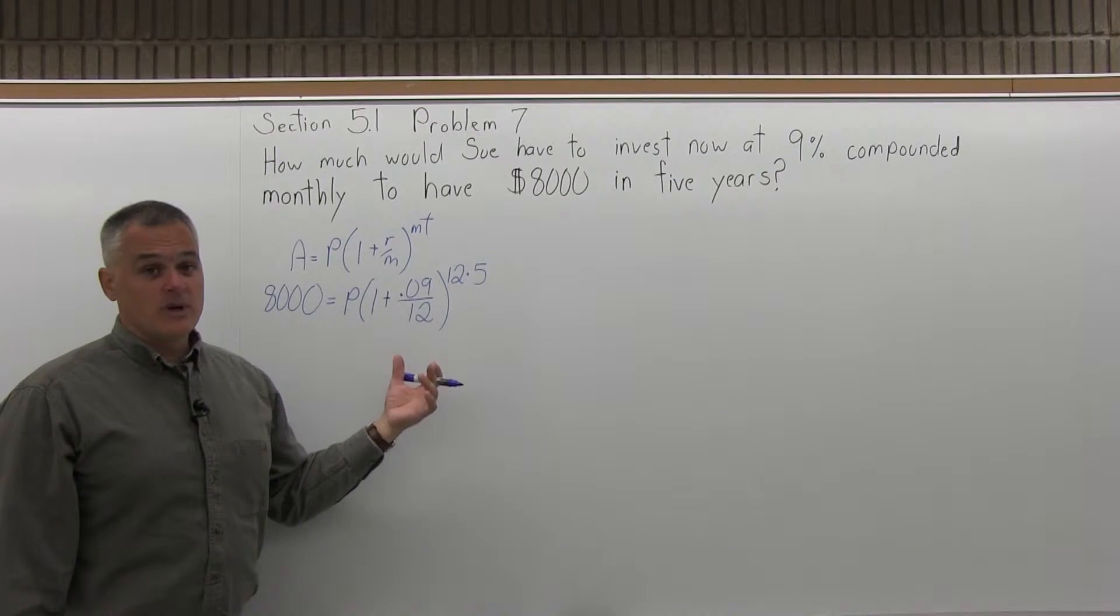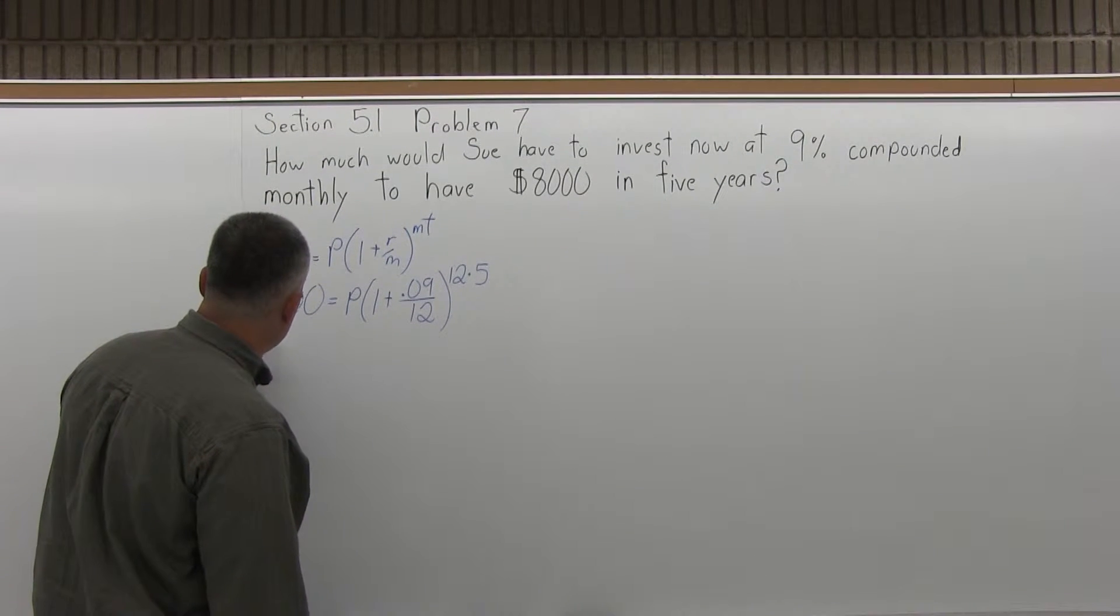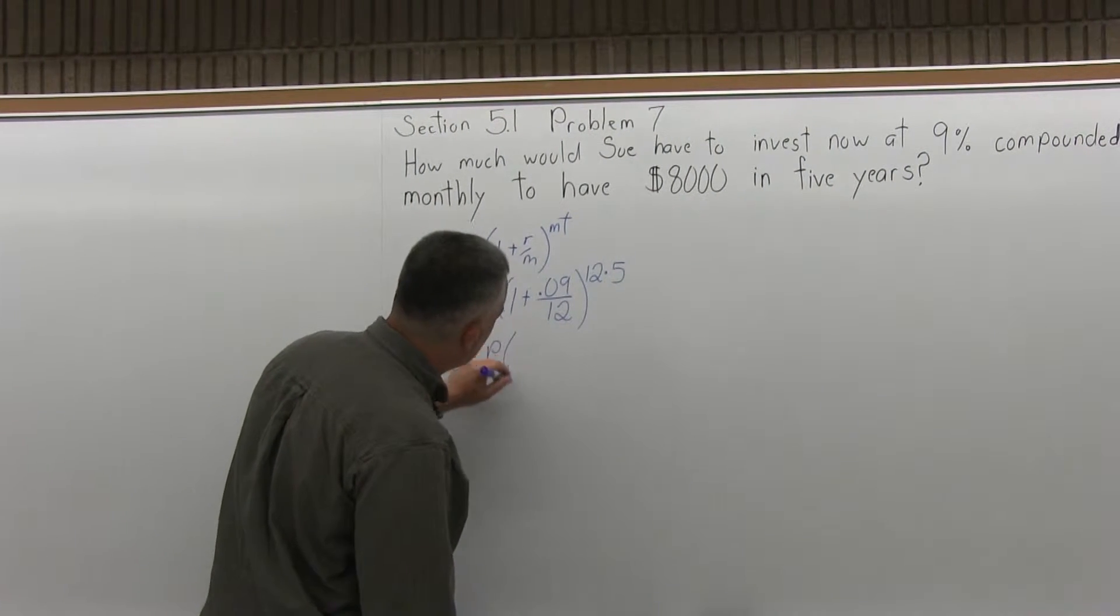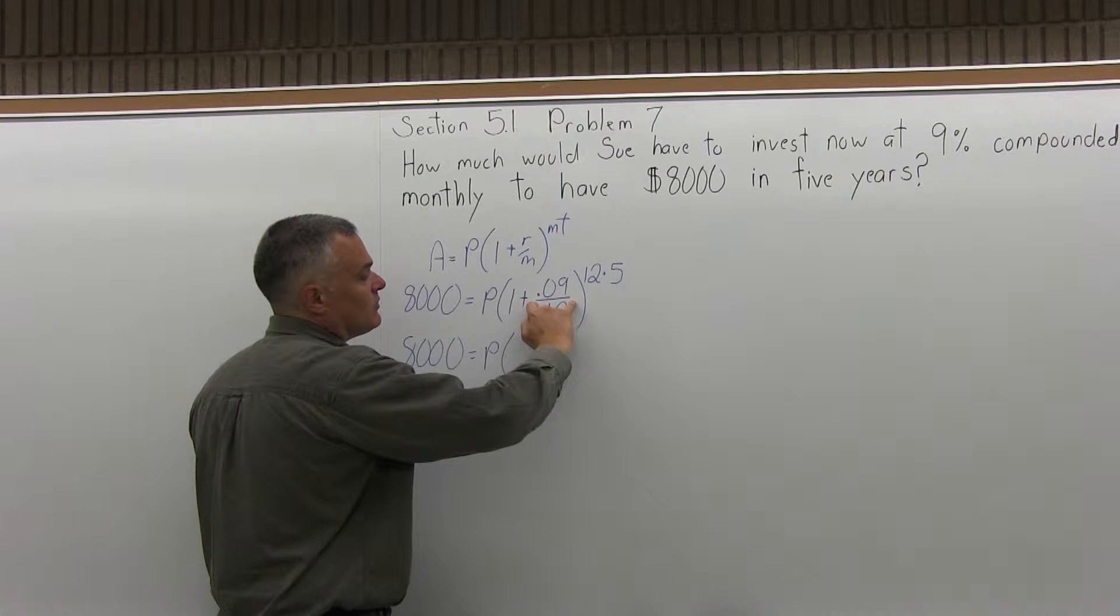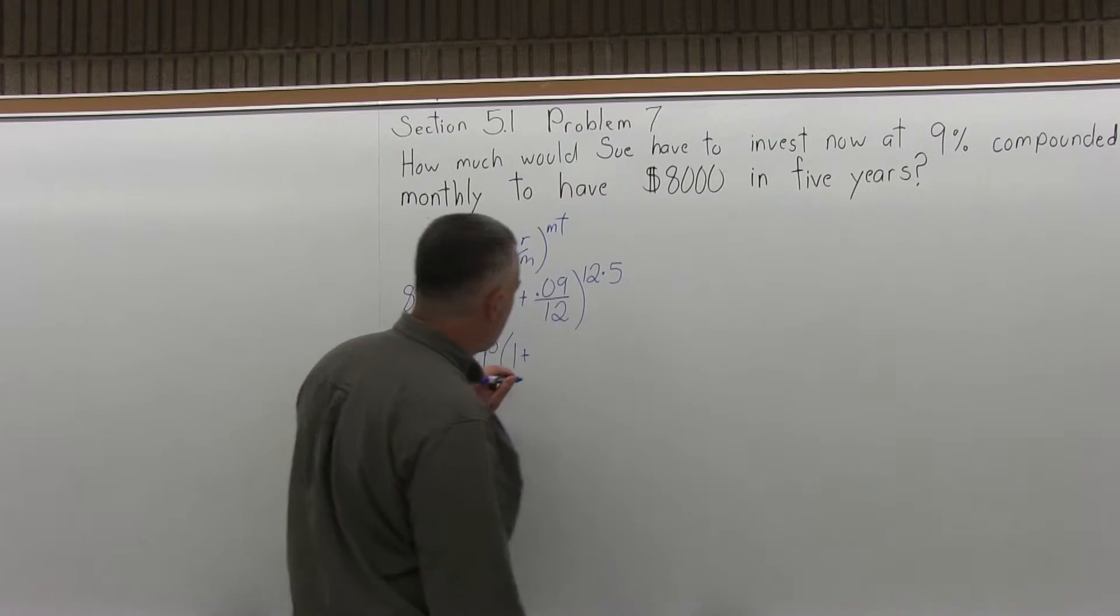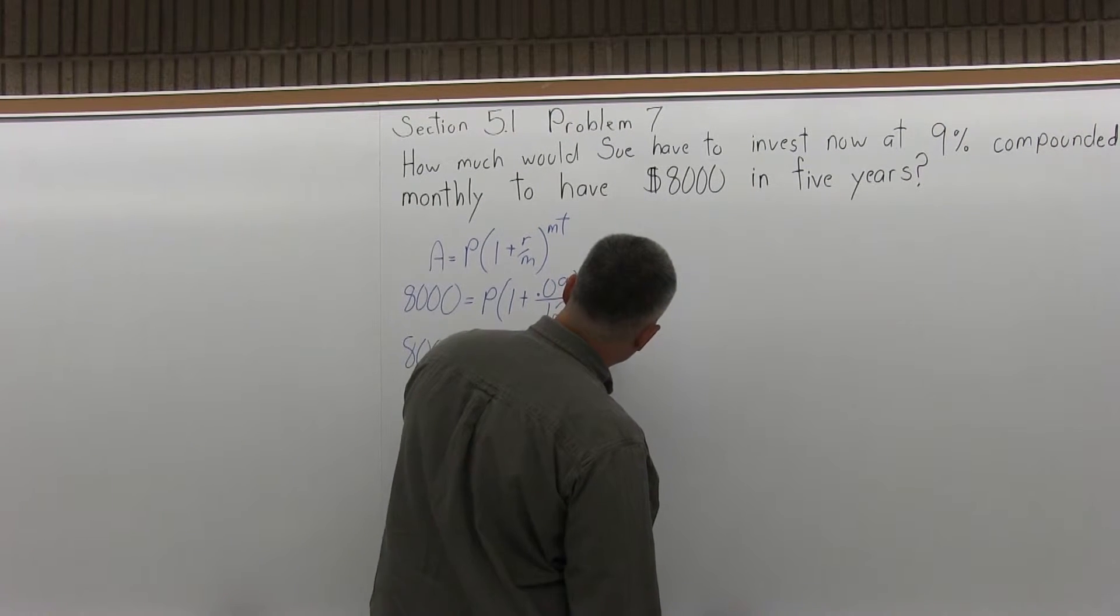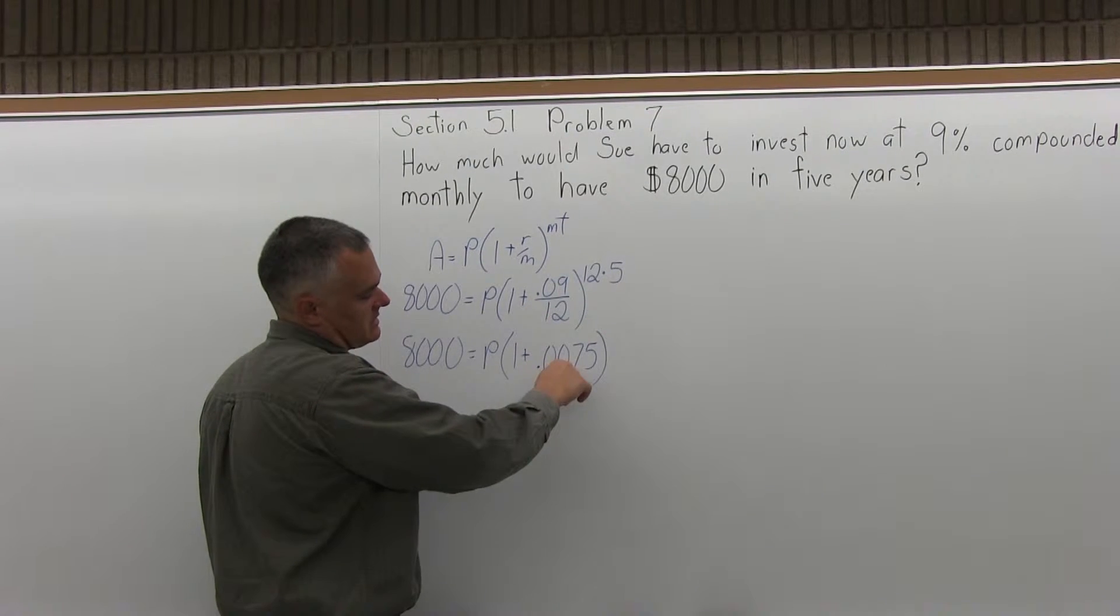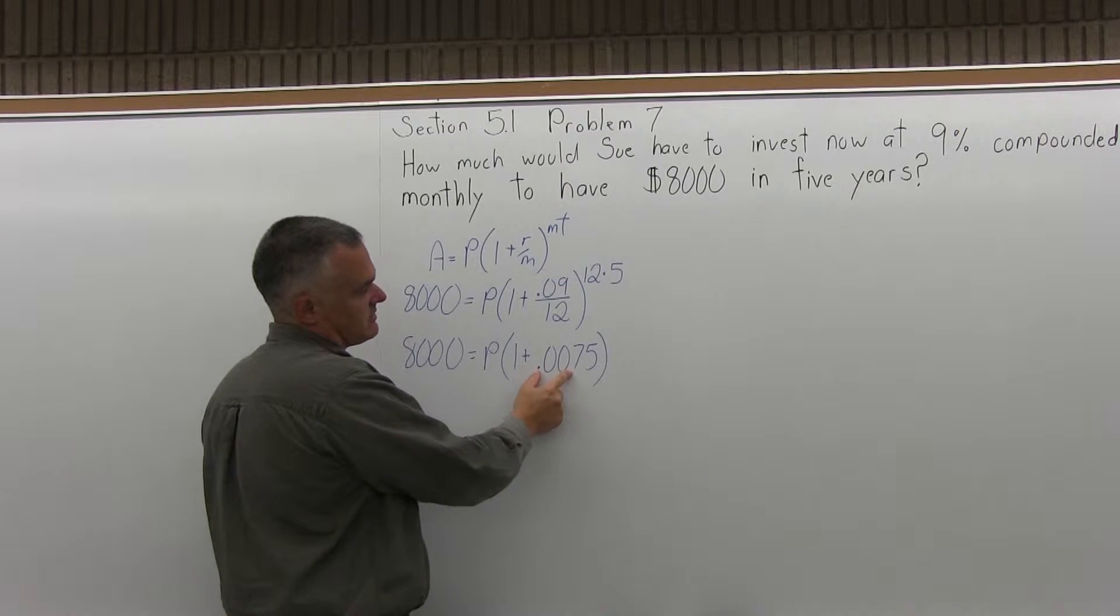Now again, this formula has some parentheses. In any type of math, you have to do your work in parentheses first. So I'm going to have 8,000 equals P times, now in parentheses, I have an addition and a division. I need to do the division first. So it's going to be 1 plus .09 divided by 12 is .0075. If you don't see that easily, just use your calculator. I know 9 twelfths is 3 quarters or .75, but because of the decimal, instead of .75, it's .0075.